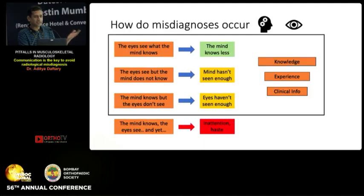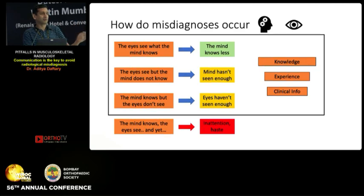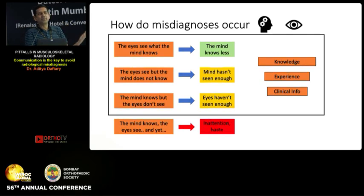How do misdiagnoses occur? They typically occur for a variety of reasons. First, the eyes see what the mind knows — the mind knows less, so you don't see what you're supposed to see. Second, the eyes see but the mind does not know — you pick up a finding but don't know what to make of it, usually because the mind hasn't seen enough cases. Third, the mind sees but the eyes don't know — you know what to look for but not how to look for it. And last, the mind knows, the eyes see, but still we miss it — usually because of inattention or haste.